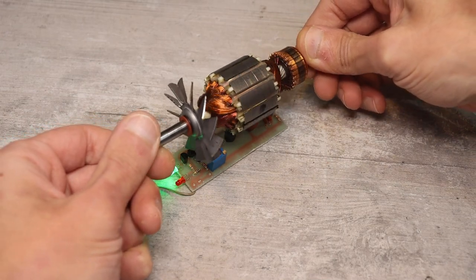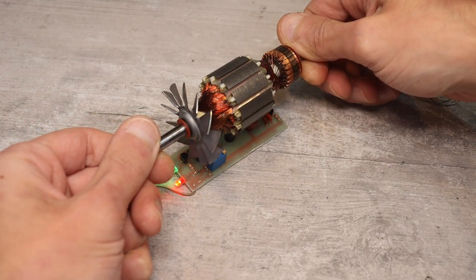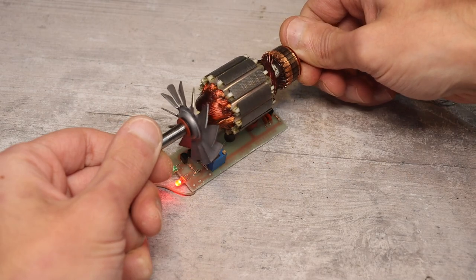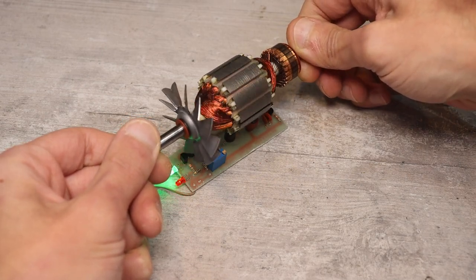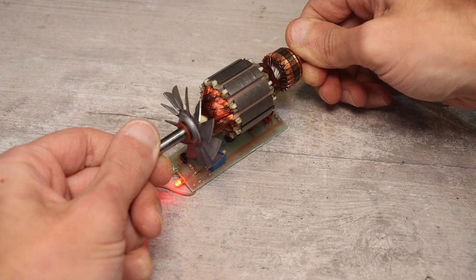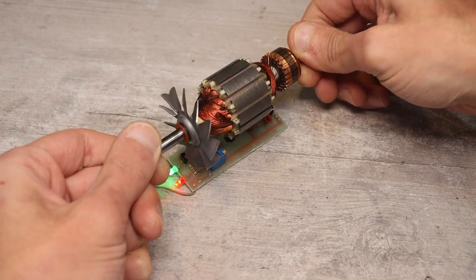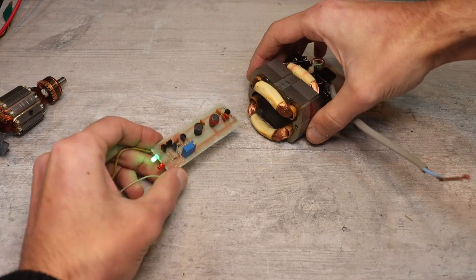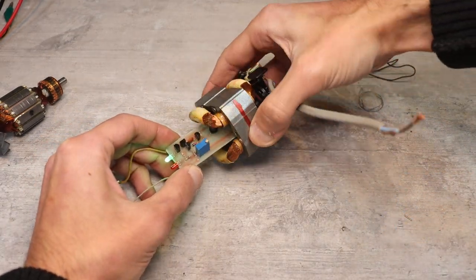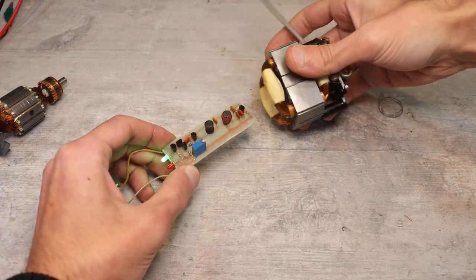The device works like this. Bring the coil of the detector, for example, to the rotor of the electric motor, and rotate it. Or you can move the detector itself. If there are short-circuited turns in a certain place, the red LED will light up. If there is no short circuit, the green indicator will light up.